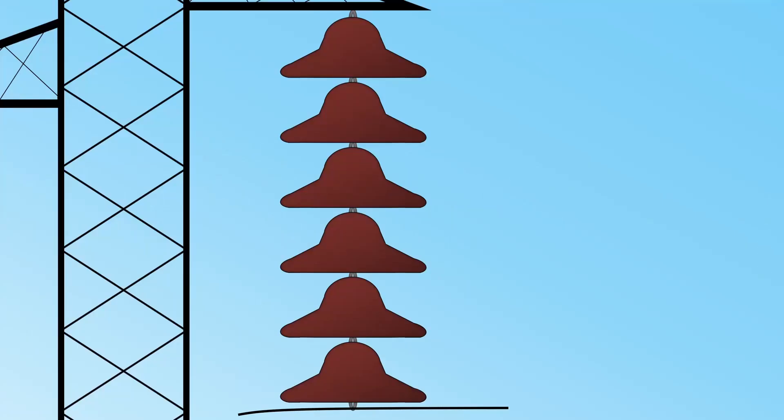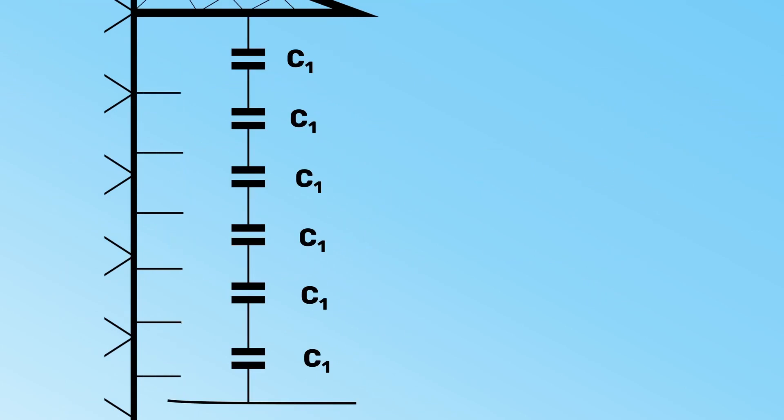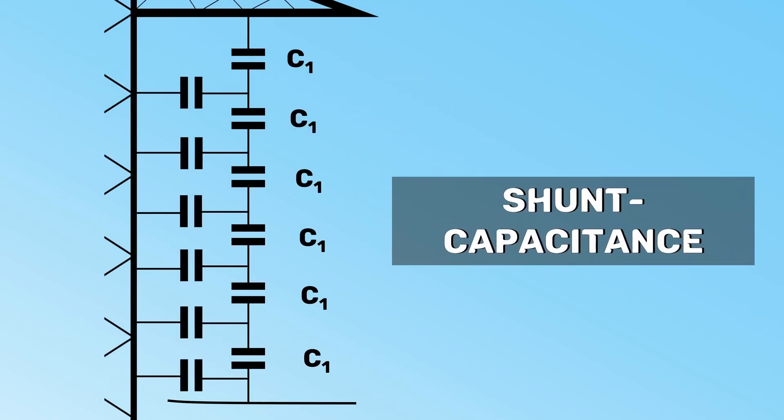Now, there is another capacitor hidden here. It's between the tower and the metal link. Here, the dielectric material is air. This is called shunt capacitors.